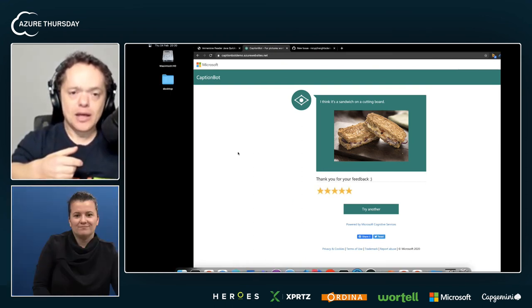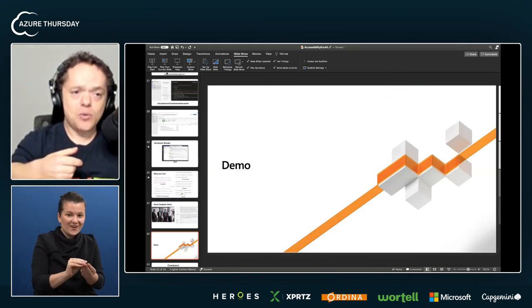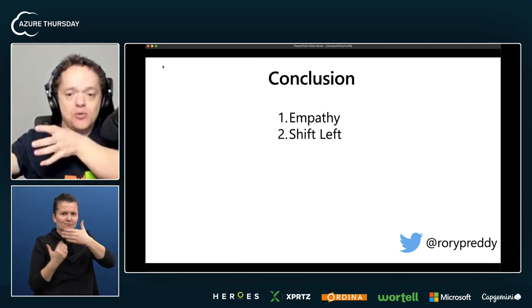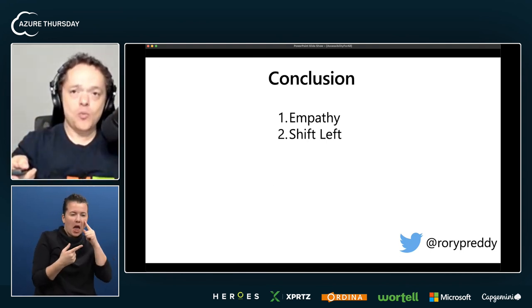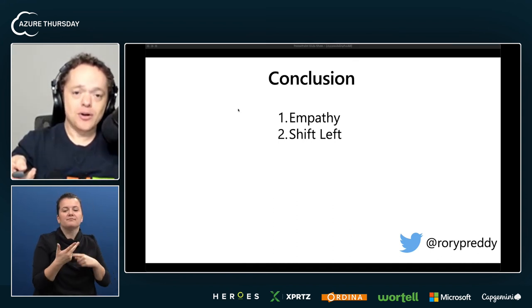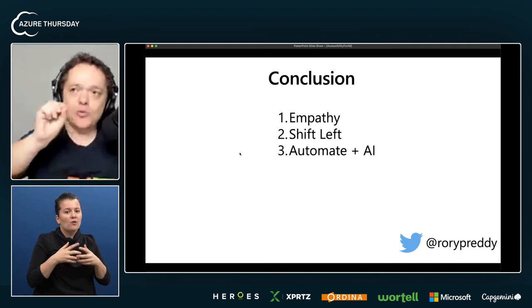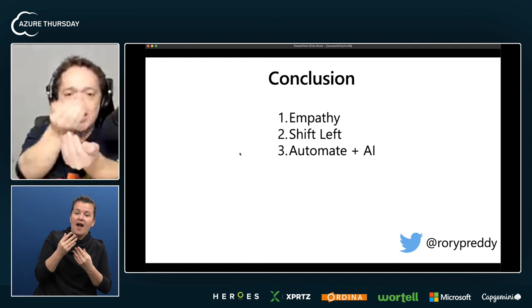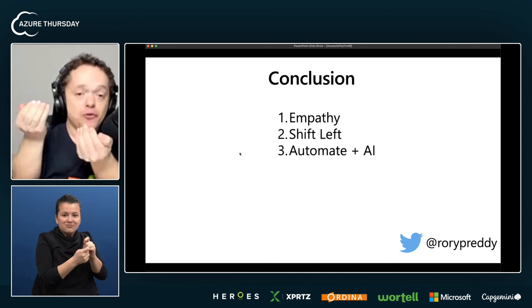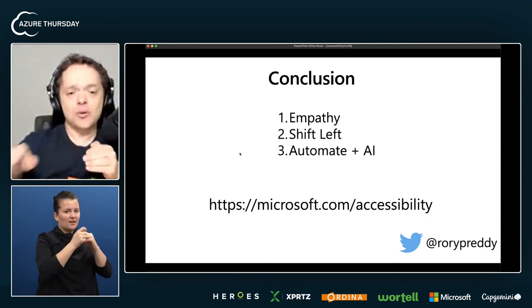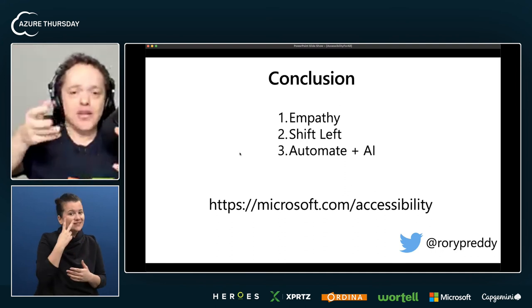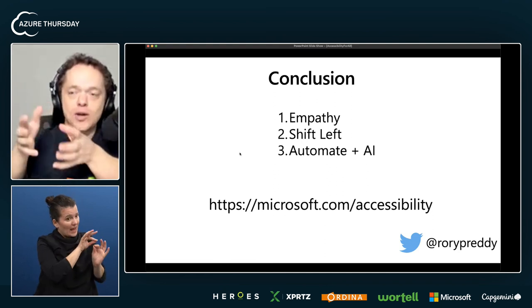And that's everything I wanted to show you today. Let's go back to our slides. I want to challenge you: create it with your persona spectrums, become that person, solve for one, extend to many, shift left, take your systems, test in the beginning, test at the end, test forever. And finally the most important: automate and AI. You know you're doing well because you're testing constantly, and your AI is giving you the ability to test and change the entire process if necessary. Take advantage of AI and leverage the fourth industrial revolution. All of that is at microsoft.com/accessibility. Follow me at Rory Pretty and start your journey. Do that fast pass, take your websites, and understand exactly how you can help your audience, your customers, and your developers.